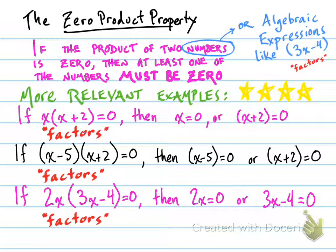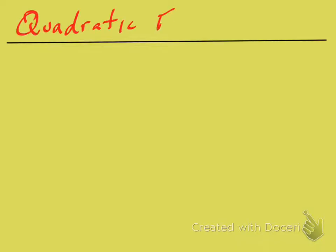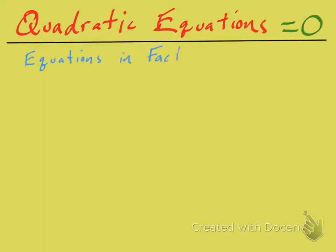That's how we use the zero product property to solve quadratic equations. Almost every time you solve a quadratic equation, you're going to have that equation set equal to zero. If it's not already set to zero, that might be your very first step. The examples I'm giving now are all in factored form, meaning the equation is written as a product of two factors — like x times (x plus 4).